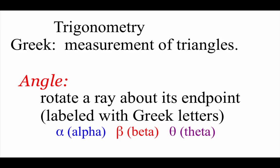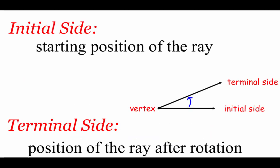We're going to use Greek letters to name these angles. I've got a couple examples: alpha, beta, theta. We use those to distinguish these angles from our regular variables like x, y, w, z. As we're building these angles, there are two different sides: the initial side, which is the starting position of the ray — in the picture the initial side is the ray running along the bottom — and as we rotate it up, that becomes the terminal side, the ending position of the ray. The endpoint of those rays becomes the vertex, or the point of the angle.